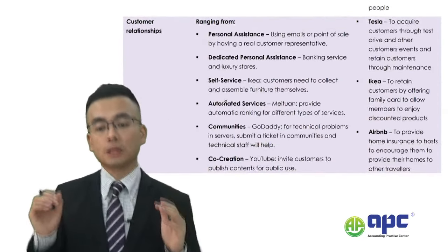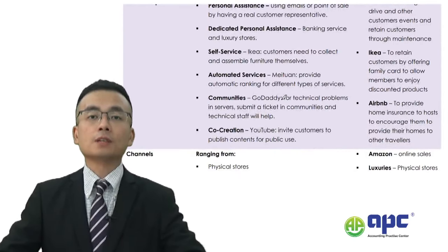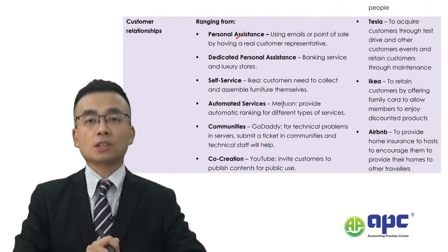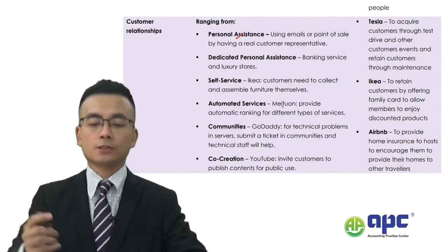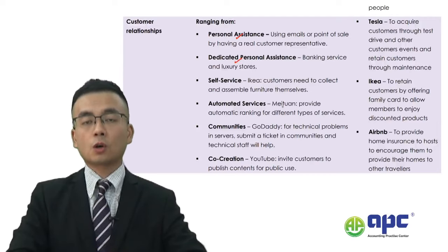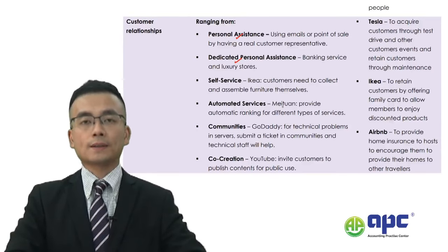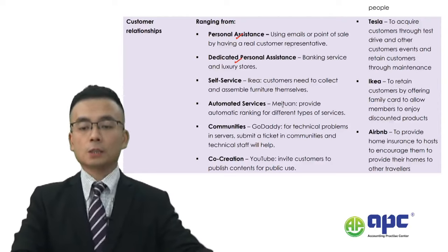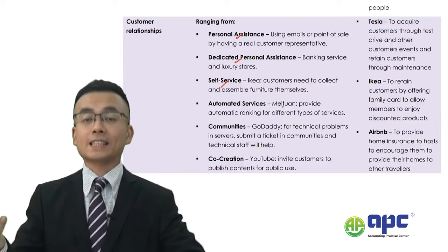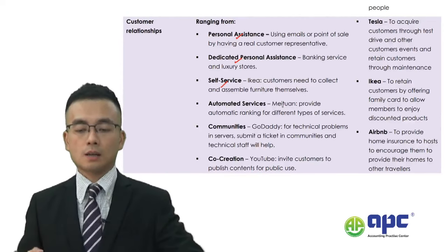In terms of customer relationships — another element in strategy — different businesses will have different ways to deal with their clients or customers. They may have personal assistance by writing emails to a client, or dedicated personal assistance. For example, if you go to luxury stores or use a banking service, the staff will serve you personally. Or self-service — for example, if you go to IKEA to buy furniture, you need to pick it up yourself.